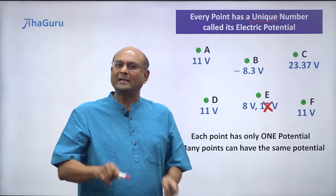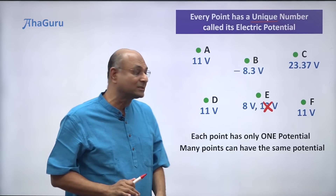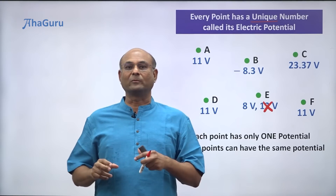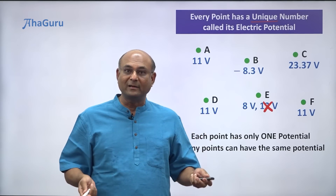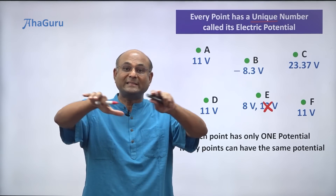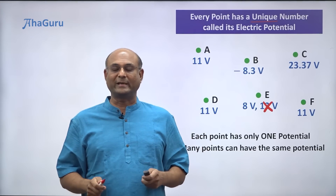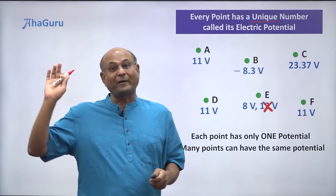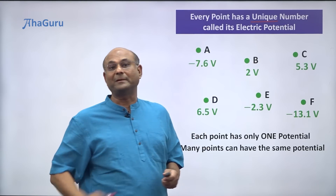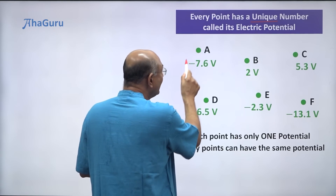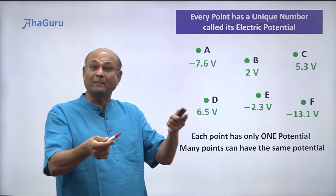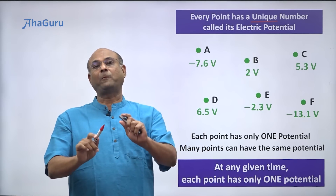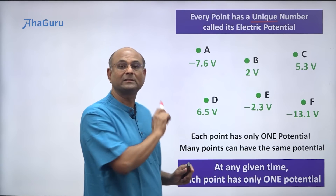Does this mean forever A must have only 11 volts, or B must always have minus 8.3 volts? Not really. If I move some charges around — switch on or switch off a light, switch on the AC — as long as I induce electrical changes, all these numbers will change. But notice: at any given instant, each point still has only one unique electrical number called its potential.